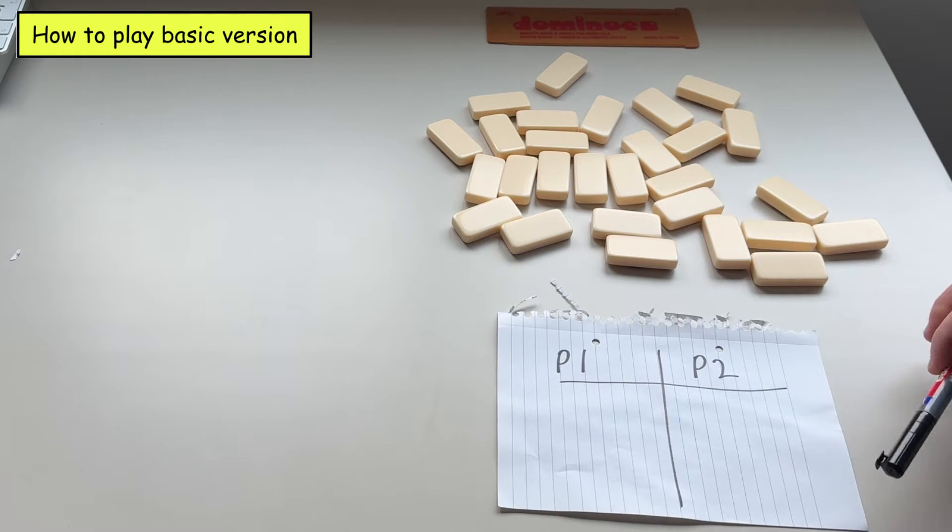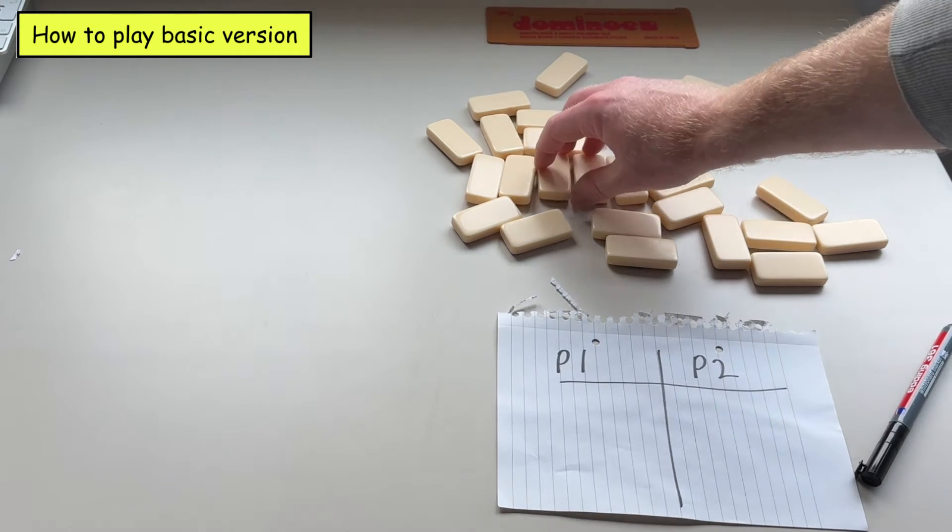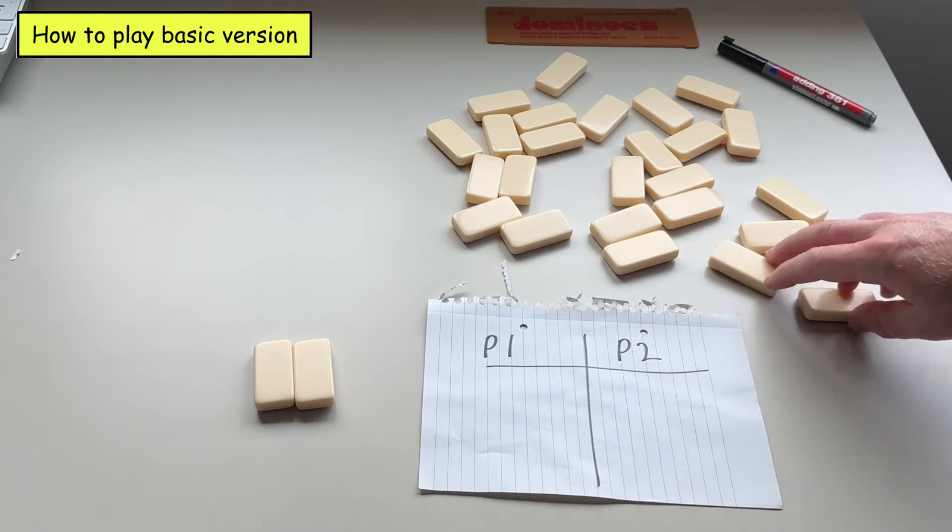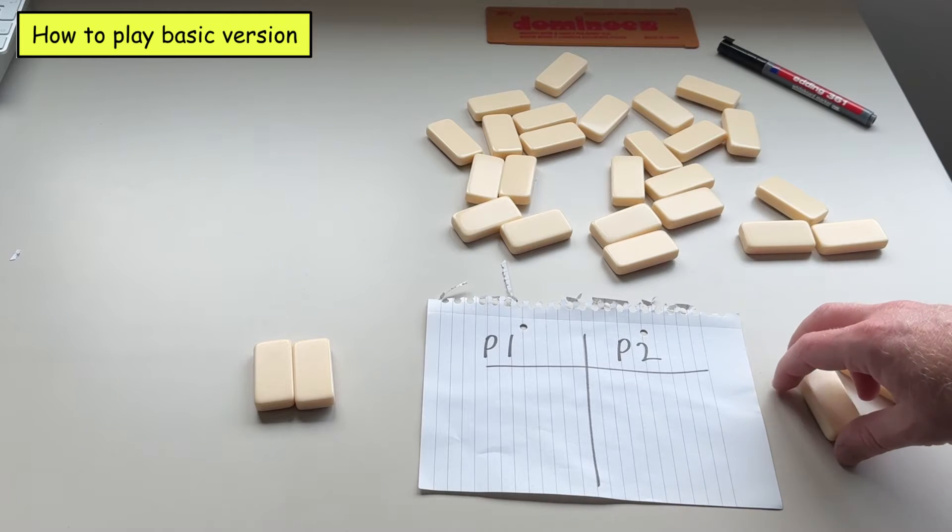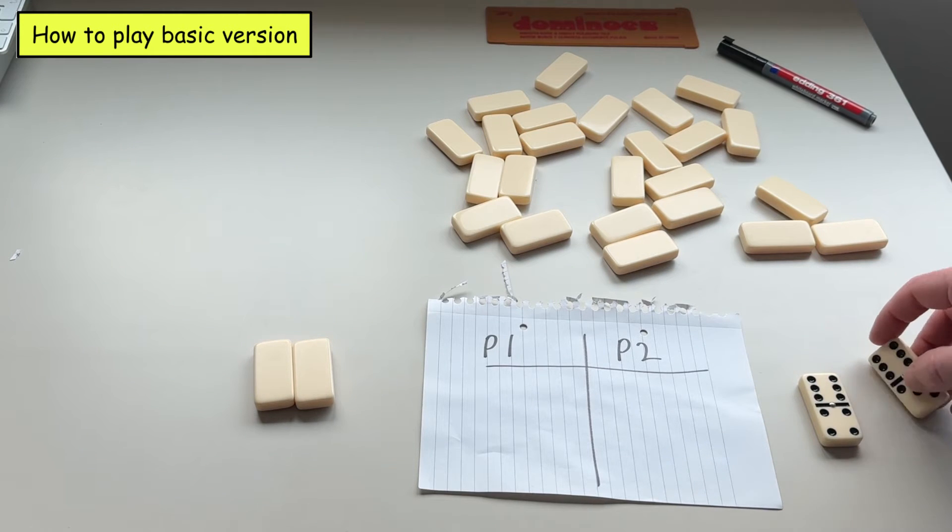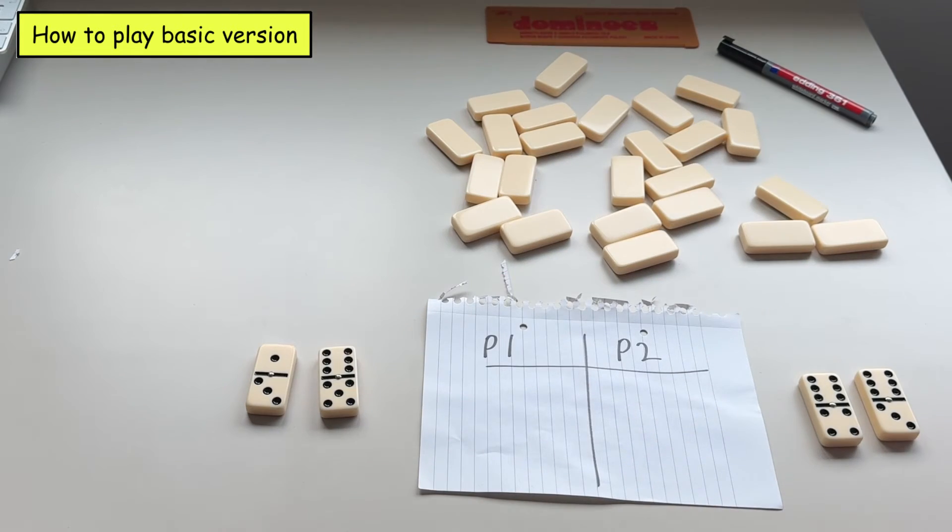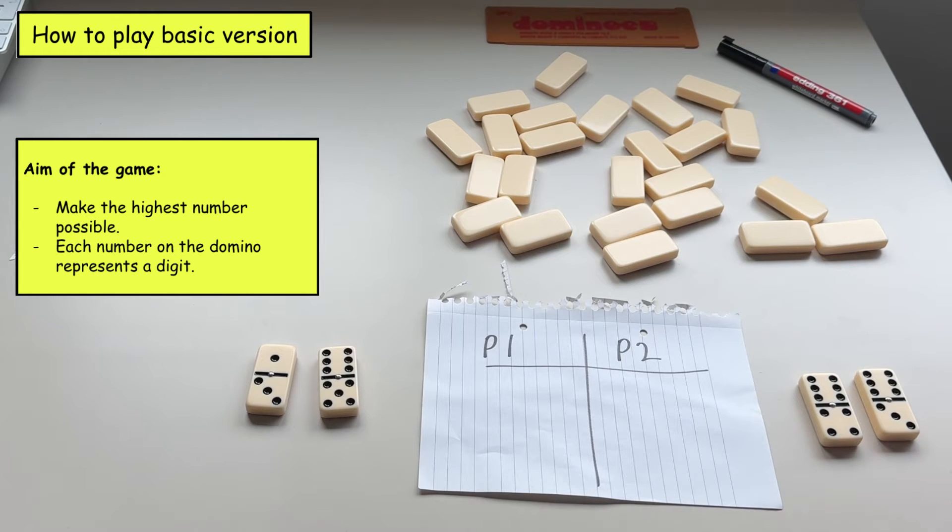So the game starts when player one will pick two dominoes and player two will also pick two dominoes. So they will turn them over in secret and they will take a look at the numbers that are on the dominoes.